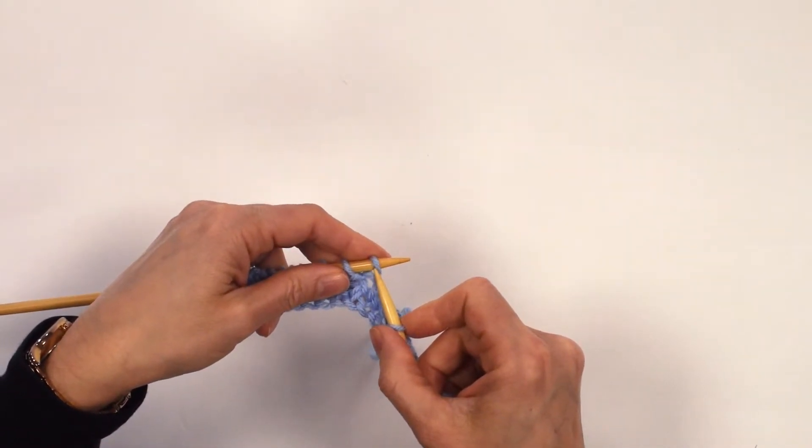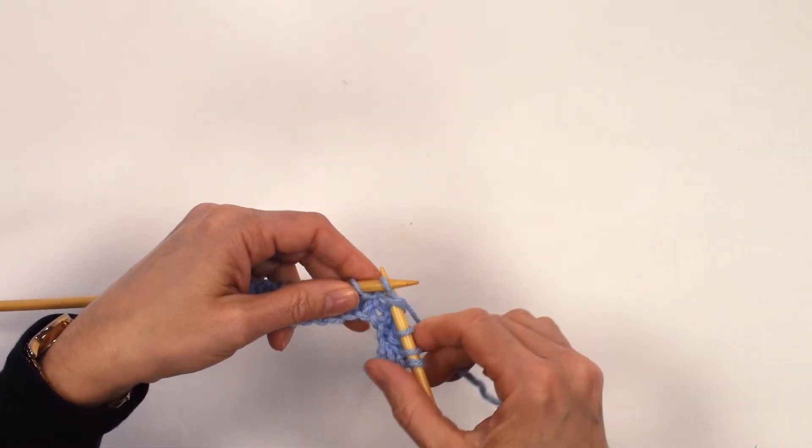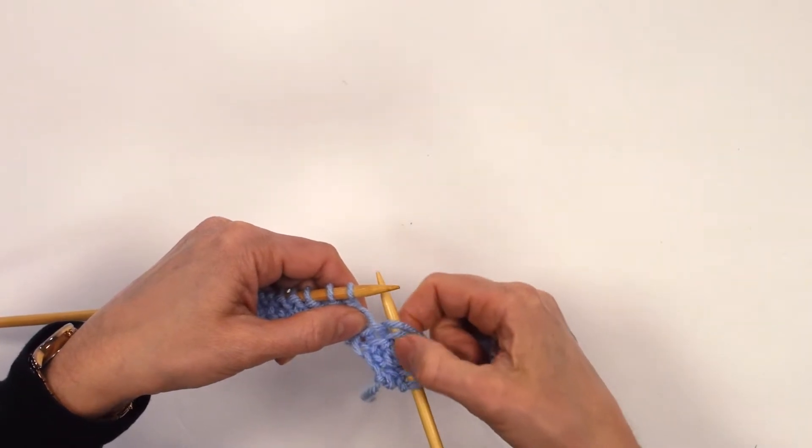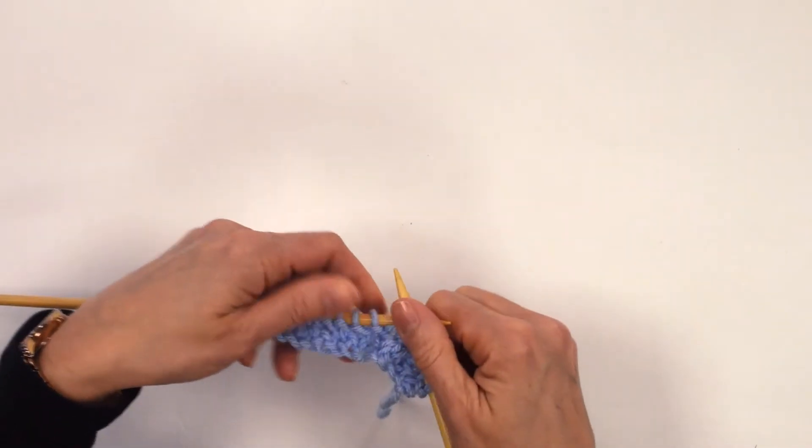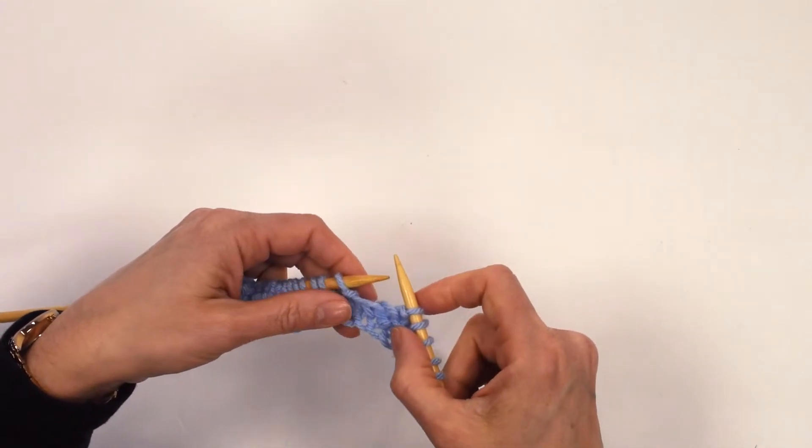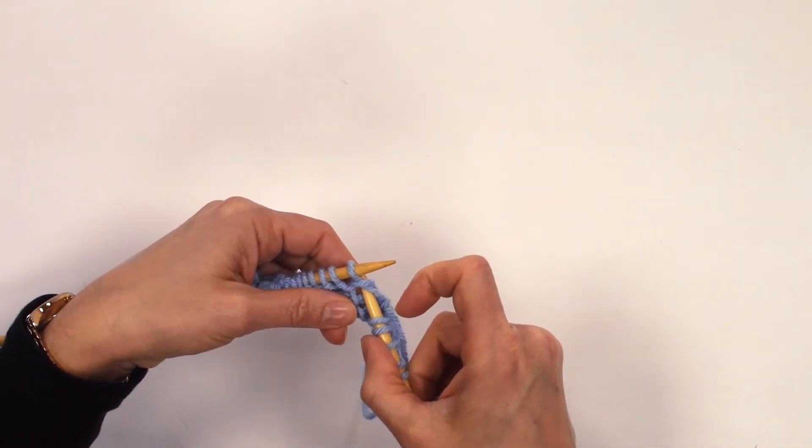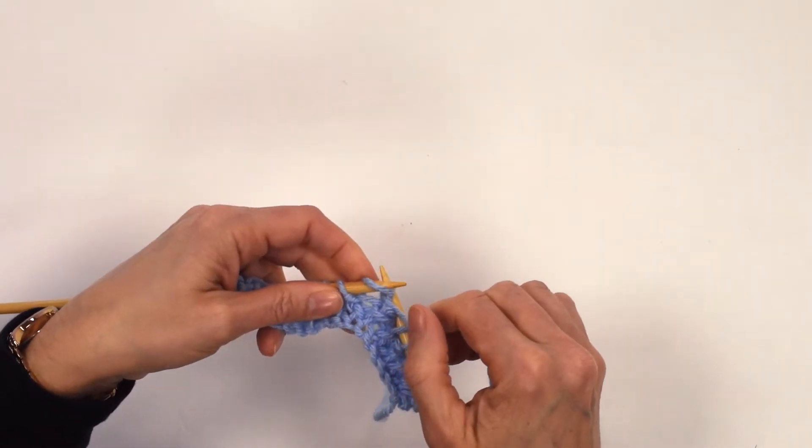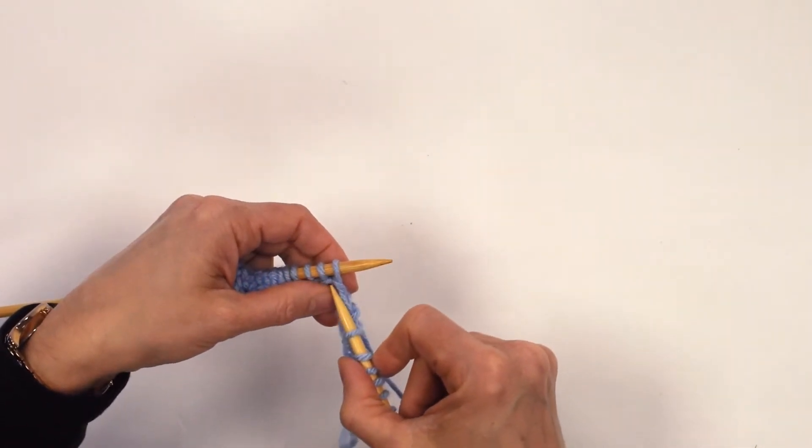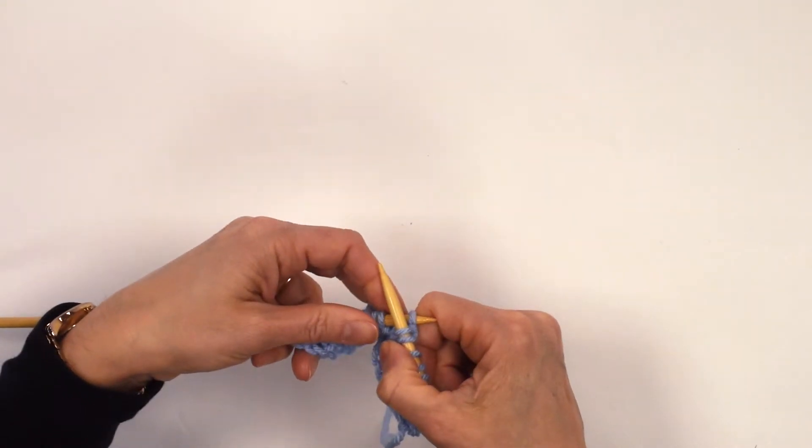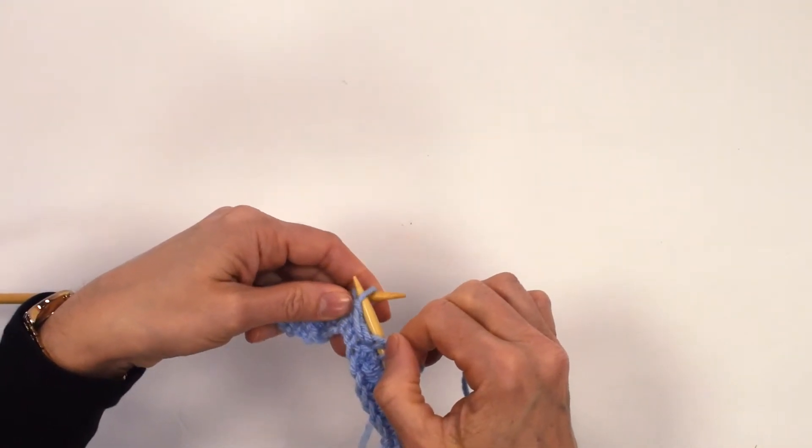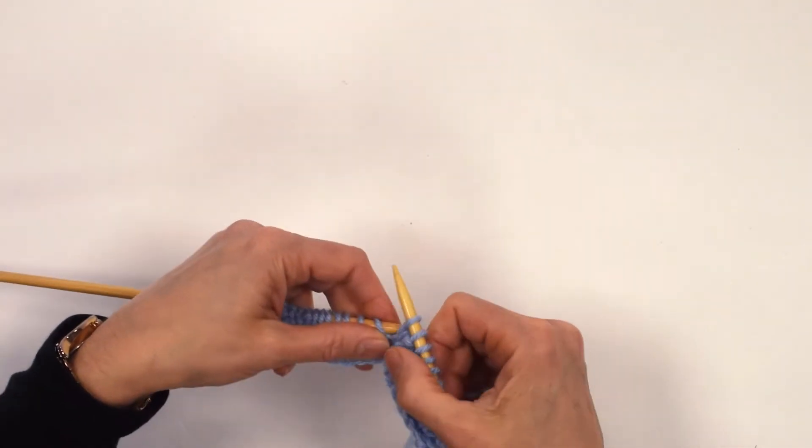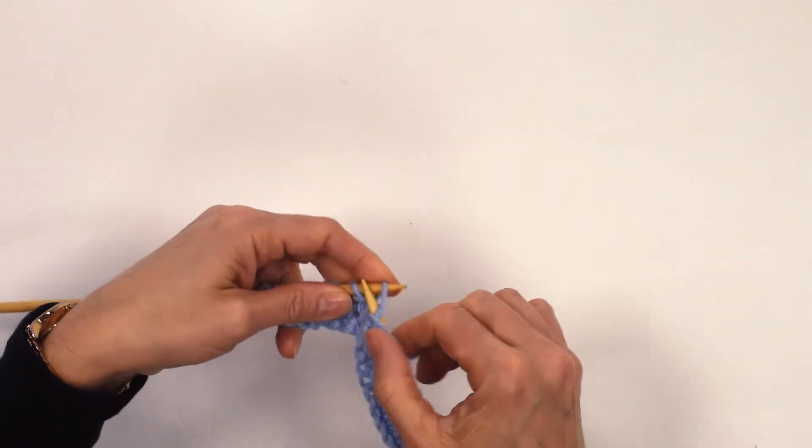Then you purl one. And then again, we don't go in there. We're going in underneath this. So you're getting that double thickness. And as you pull, you can see how they're starting to disappear. The purl rows starting to disappear. So again, knit one below. So we're going into the hole. Purl one. Knit one below. Purl one. Working nice and evenly across the row.